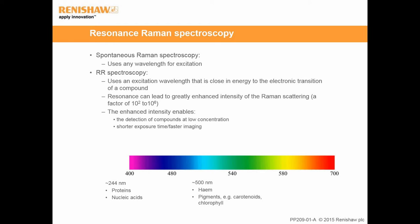We can use light of any particular wavelength to excite samples in spontaneous Raman spectroscopy. Resonance conditions are achieved when an excitation wavelength close in energy to the electronic transition of a compound is used. Resonance can lead to greatly enhanced intensities of Raman scattering, up to a million times. This resonance enhancement enables compounds to be detected at low concentrations, and short exposure times can be used for faster imaging. Deep UV wavelengths at around 244 nm can be used for resonance Raman spectroscopy of proteins and nucleic acids. Visible wavelengths at around 488 to 532 nm can be used for heme and pigments such as carotenoids and chlorophyll.